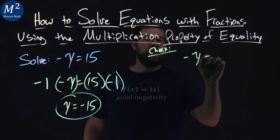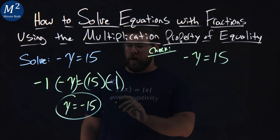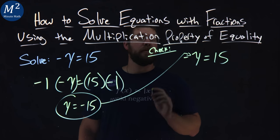Rewrite our equation. Negative y equals 15, and we're going to substitute negative 15 in for y.